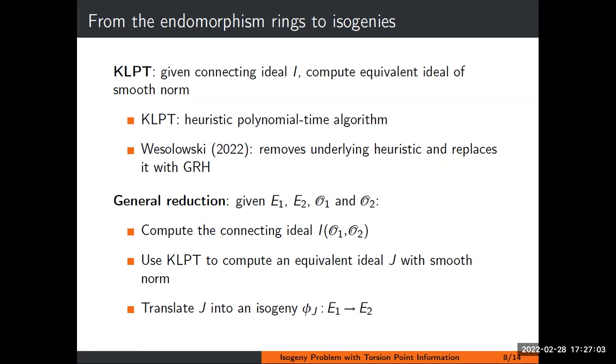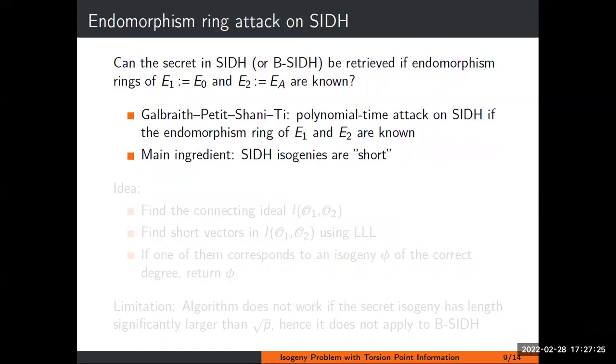How does the general reduction work? Suppose I know the endomorphism ring of both curves, how can I compute an isogeny between them? I compute a connecting ideal, then compute an equivalent ideal of smooth norm using KLPT, and then there is a standard procedure for how you can translate a connecting ideal to an isogeny.